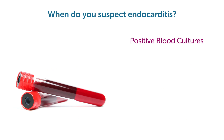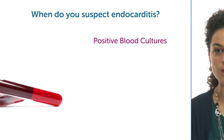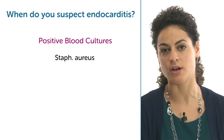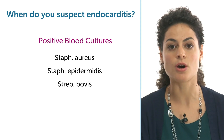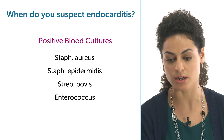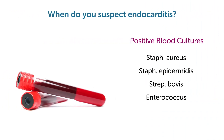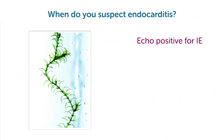And of course, if you have a blood culture which is positive for the typical agents of infection of the heart — Staphylococcus aureus or epidermidis, Streptococcus bovis, or Enterococcus — the suspicion gets higher. Echocardiography can help you, and when you find a positive echo for infective endocarditis, the diagnosis is really almost done.